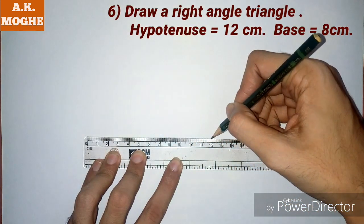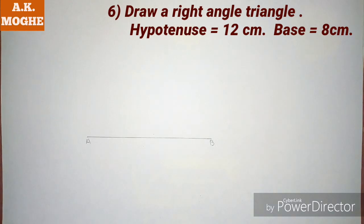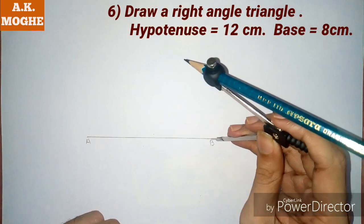Here I am drawing one side, hypotenuse equal to 12 centimeters, and then I will bisect it. The procedure for bisecting is given in the basic lessons.